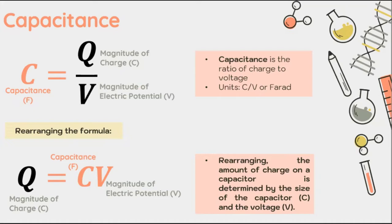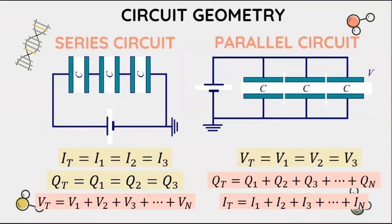We have two different types of circuit geometry: series and parallel. When capacitors are connected in series, the current and the charge of each individual capacitor — at capacitor 1, capacitor 2, and capacitor 3 — are all equal to the charge and current at the supply. So the charge is the same throughout all capacitors in a series circuit.